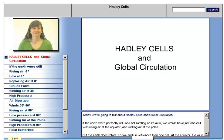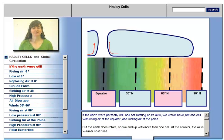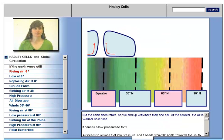Today we're going to talk about Hadley cells and global circulation. If the Earth was perfectly still and not rotating on its axis, we would have just one cell with rising air at the equator and sinking air at the poles. But the Earth does rotate, so we end up with more than one cell.